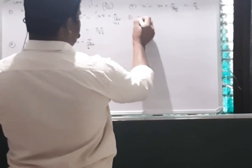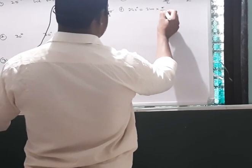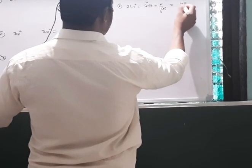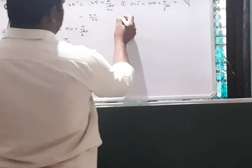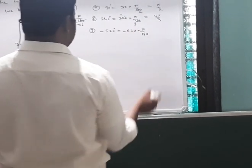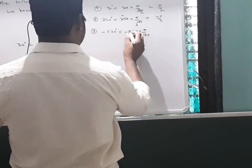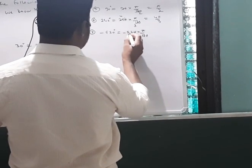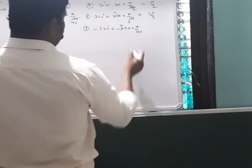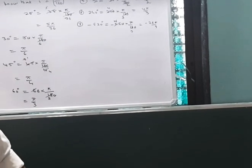The sixth example: 240 degrees equals 240 × π/180. The zero cancels and simplifying gives 4π/3 radians. The seventh example: 520 degrees equals 520 × π/180. Simplifying by cancelling common factors gives 26π/9 radians.